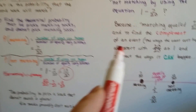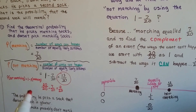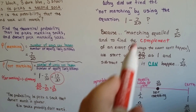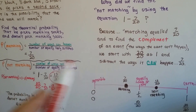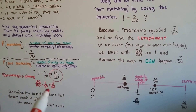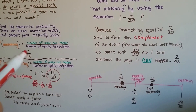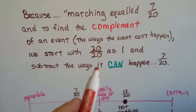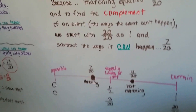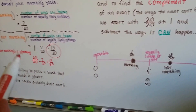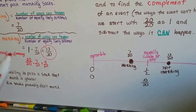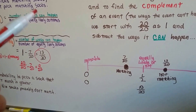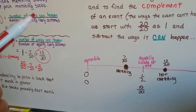Why did we find the not matching by subtracting 1 minus 7/20? It's because the matching equaled 7 over 20, and we needed to find the complement — the opposite of 7 over 20. We start with 20 over 20 as a 1 and subtract the ways it can happen, the 7 twentieths, and that gives us the complement. If we were looking for not matching first, then matching would have been the complement.